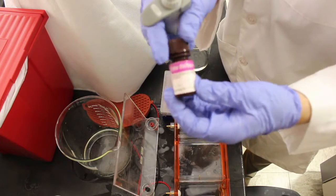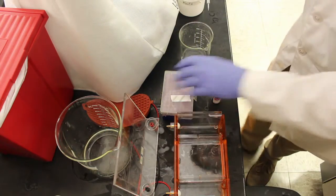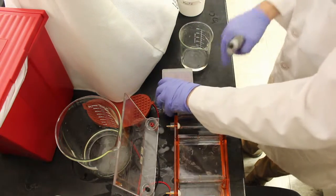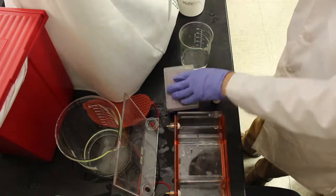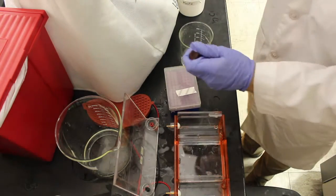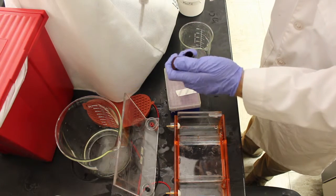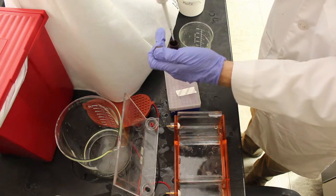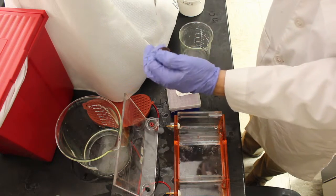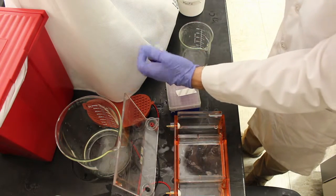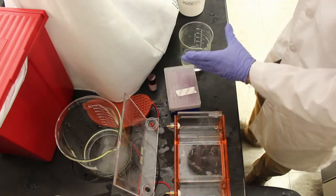Now we'll add 1 microgram of ethidium bromide to the agarose solution. Ethidium bromide inserts itself between DNA bases and fluoresces orange when exposed to ultraviolet light. Please be warned, ethidium bromide is carcinogenic and proper precautions must be taken to prevent exposure. All ethidium bromide waste must be stored in a separate waste container and disposed of properly. This includes all pipette tips used with ethidium bromide and gels.